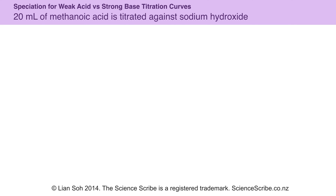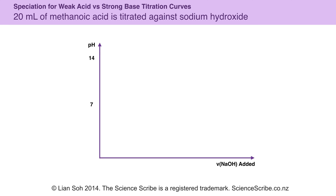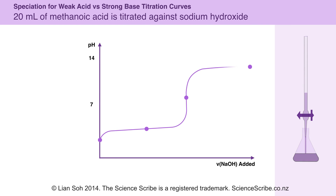Starting with our weak acid strong base titration, I'm going to use methanoic acid and sodium hydroxide as my examples. In terms of our titration curve, we always have this generic shape where my vertical axis is labelled with pH. Since in the beginning I'm filling my flask with 20 mLs of methanoic acid, my beginning pH should be quite low, and my burette is going to be filled with sodium hydroxide. If I keep adding sodium hydroxide, I'm going to end up with a pretty high pH at the end. You can see that I've highlighted four important points on this titration curve.